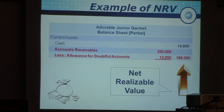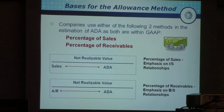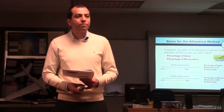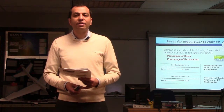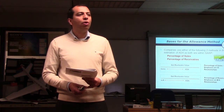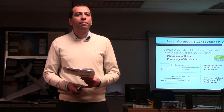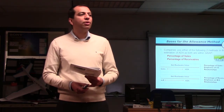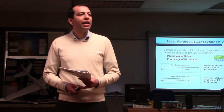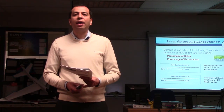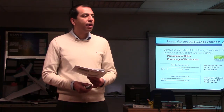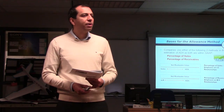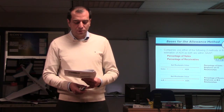There are two bases for the allowance method to calculate the ADA amount. You can use sales, or you can use actual accounts receivable. For example, if 2% of your sales are uncollectible, then 2% of sales becomes your base. Alternatively, if 4% of people with an AR balance won't pay, then 4% of AR becomes your base. Both methods are completely acceptable under GAAP, IFRS, and ASPE.